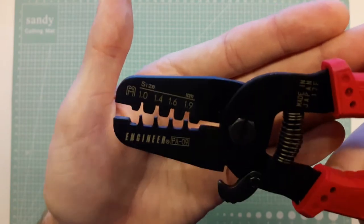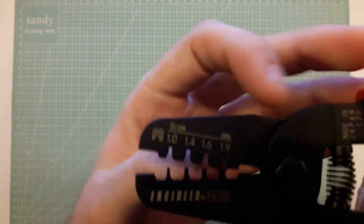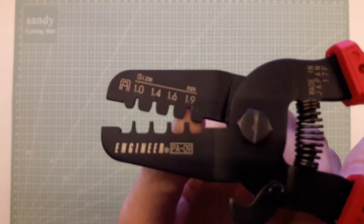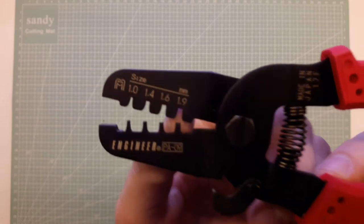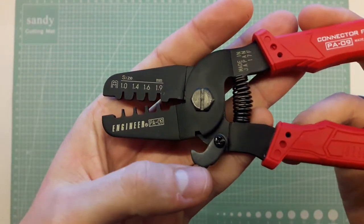Now this camera doesn't show that well but there's a little notch at the top like where the dot is and that bends in the connector. I'll show you that in a minute.